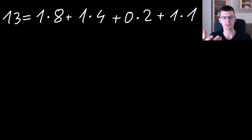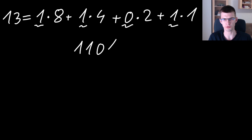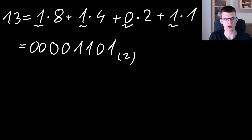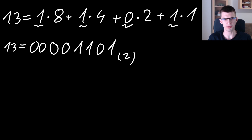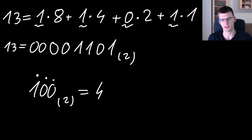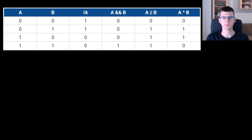For example, it should be clear that the number 13 can be represented as 8 plus 4 plus 1, and if you take those multipliers next to powers of 2, you get that 13 is equal to 1101 in binary. We can also add leading zeros without changing the number. Other examples: binary 100 equals 4, and 111 in binary represents 1 plus 2 plus 4, so 7.